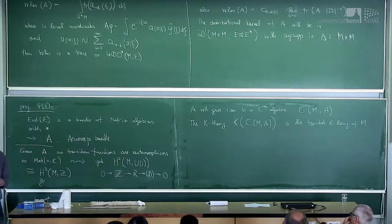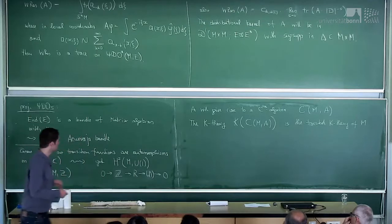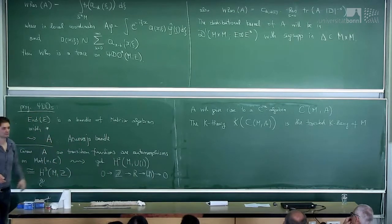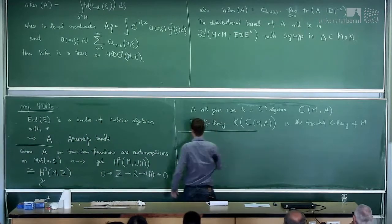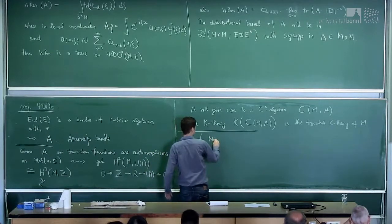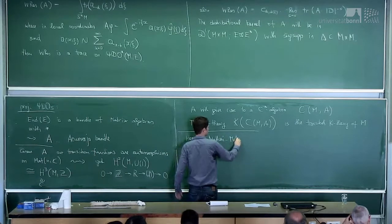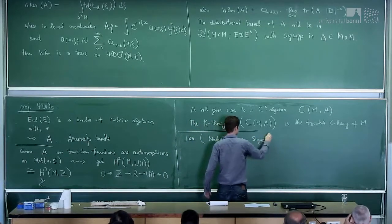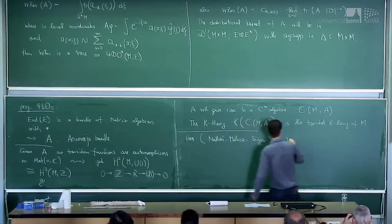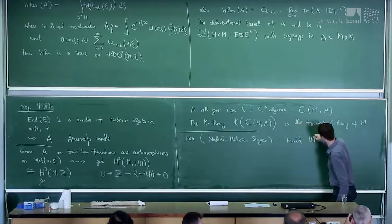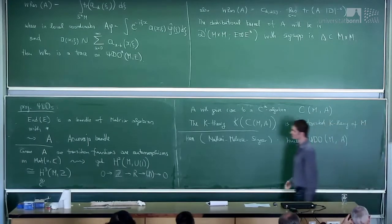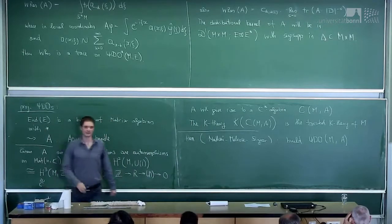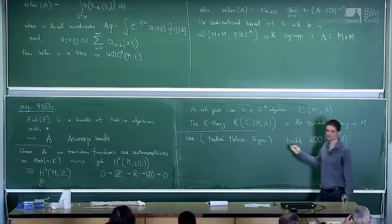So the most natural thing is: why not build an algebra of pseudo-differential operators whose symbols, rather than being in End(E), live in A? That's very natural, and that's what I'm going to do. This has been done — probably by Matai, Melrose, and also Singer. The idea is to build an algebra of pseudo-differential operators with values in A, replacing the usual algebra acting on a vector bundle, and maybe look at the index theorem. They proved the Matai-Singer index theorem in this context.